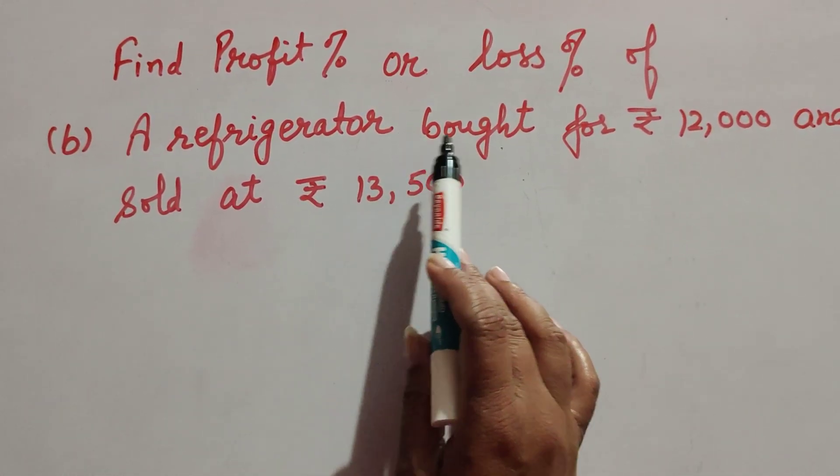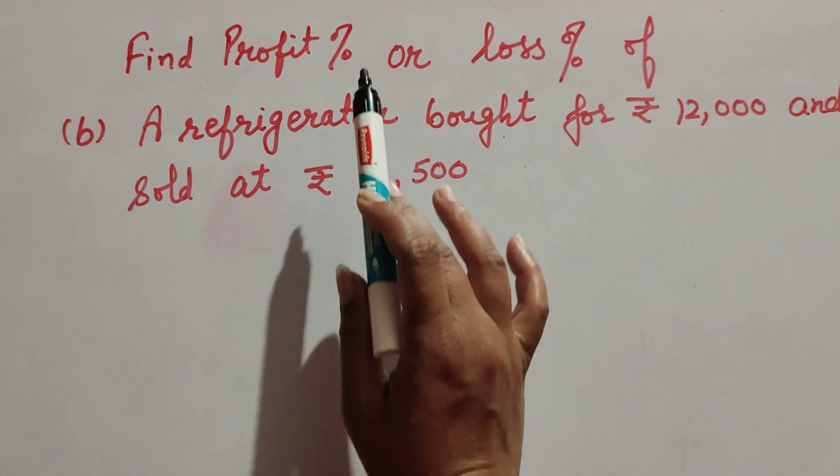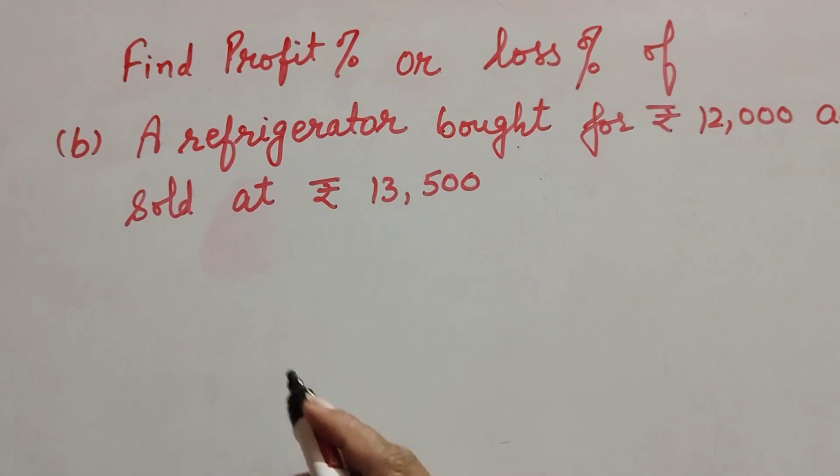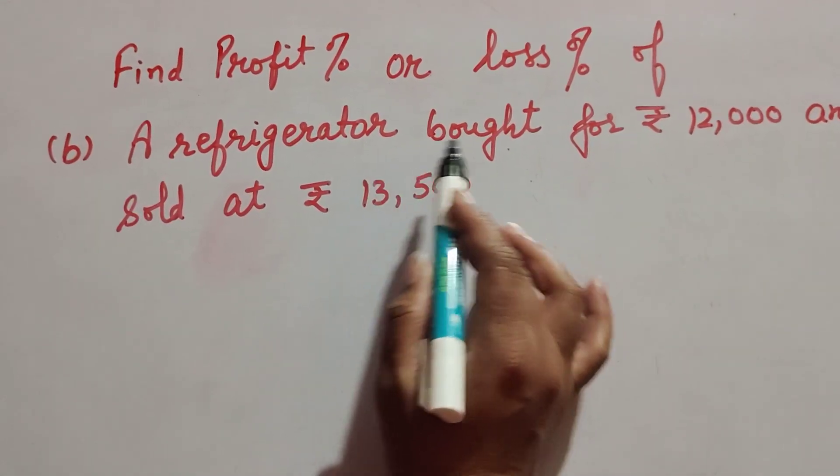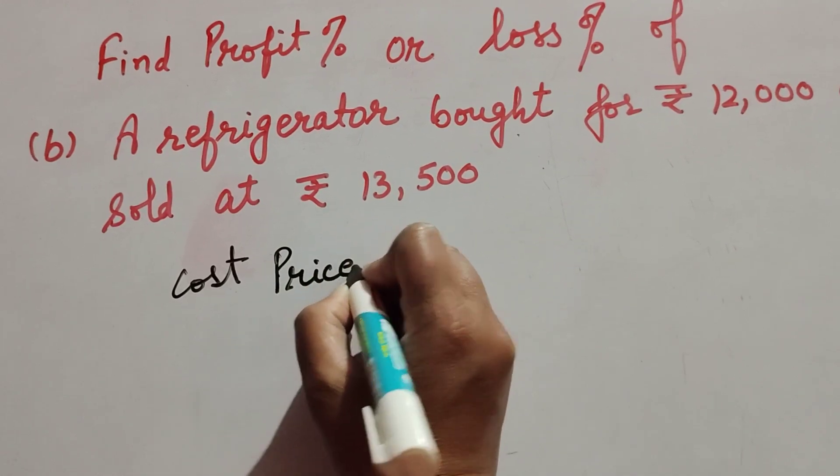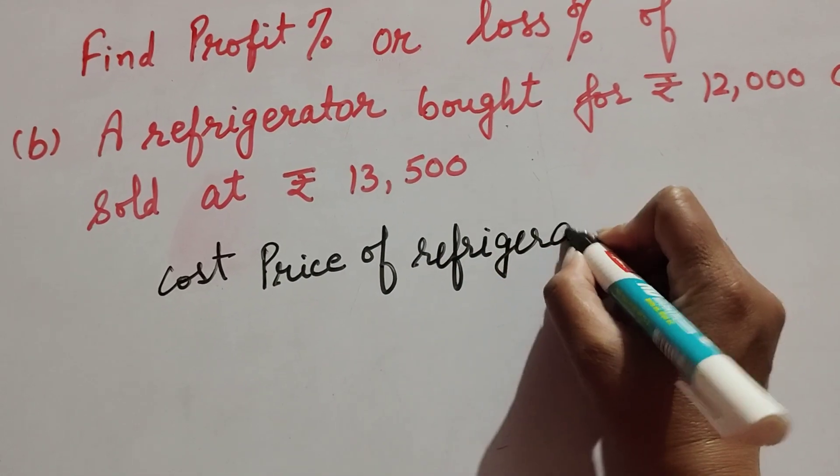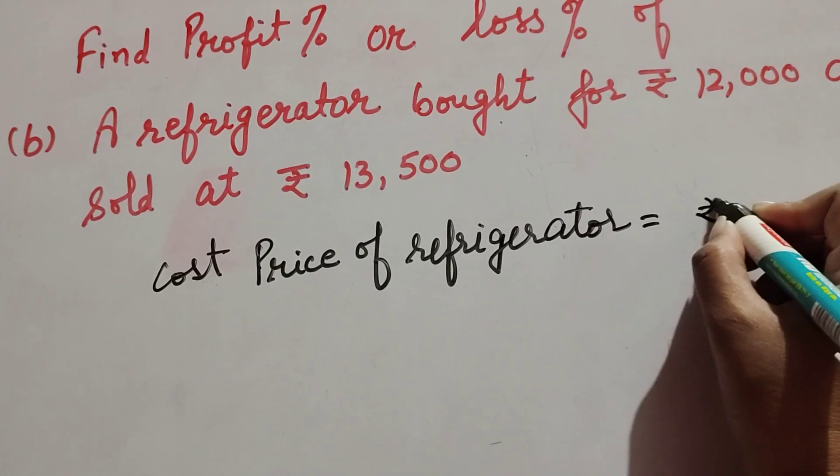In this question, the given information is the cost price and selling price of the refrigerator. We need to find its profit or loss percentage. A refrigerator bought means the cost price. Cost price of refrigerator equals Rs 12,000.